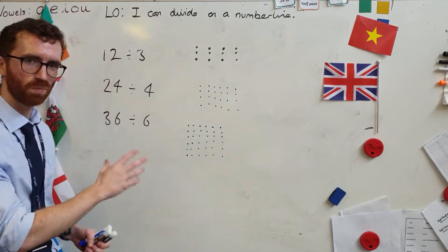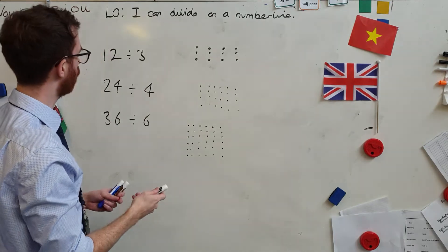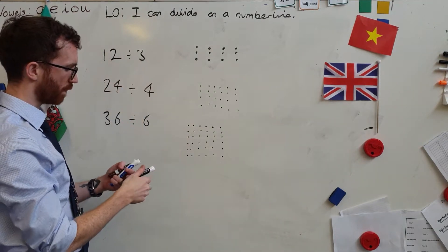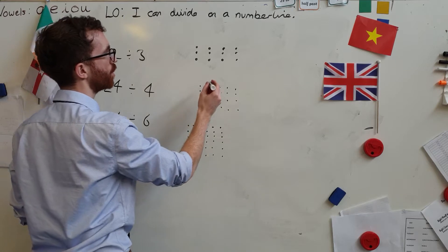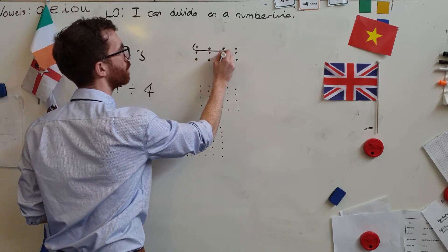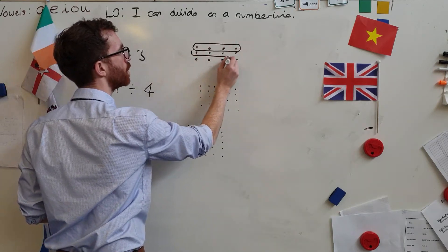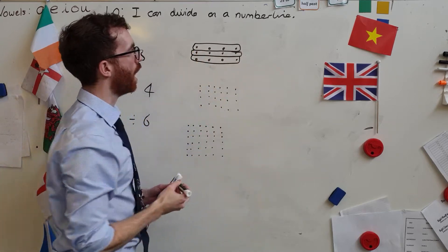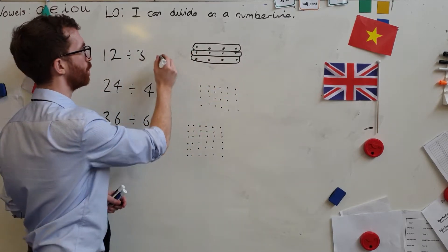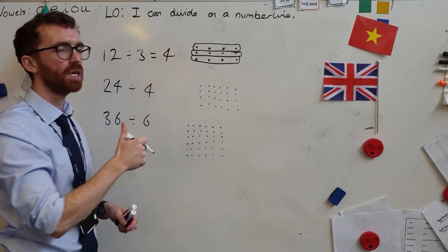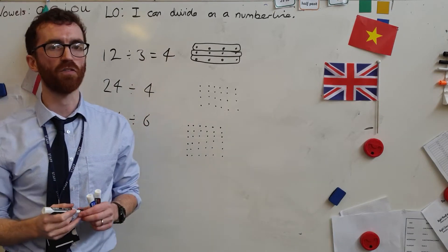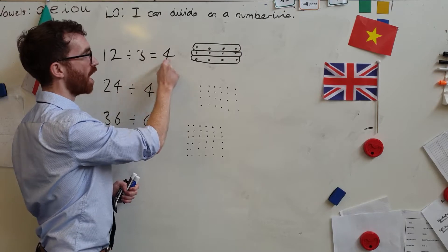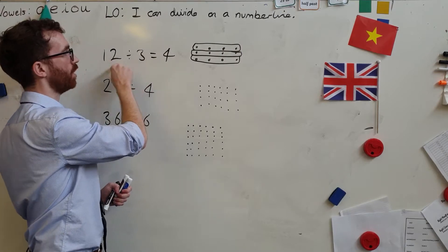So 12 divided by three: if I share it into three equal groups, there is one, two, three, and there are four in each group. So 12 divided by three equals four. In other words, three times four equals 12.